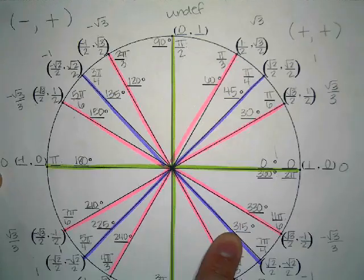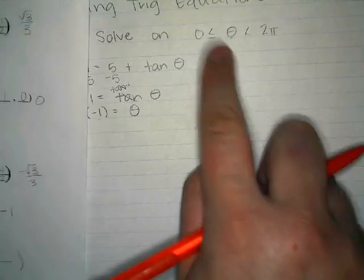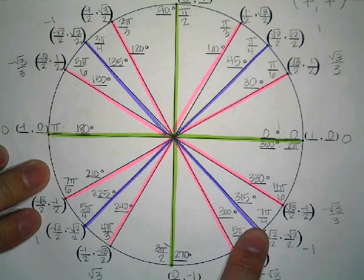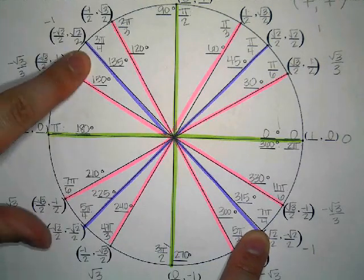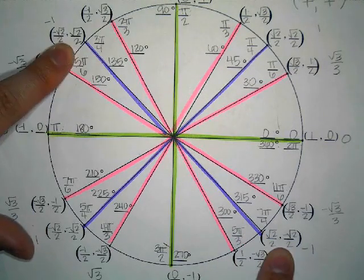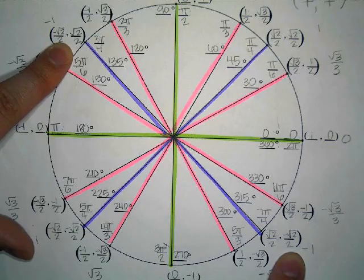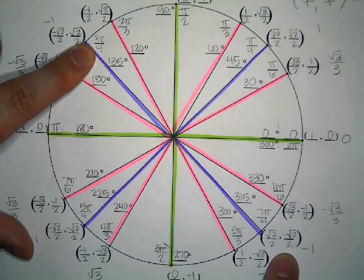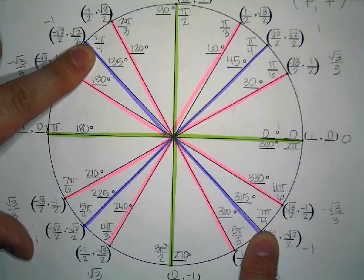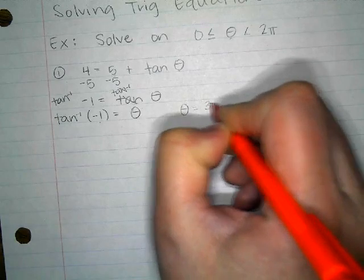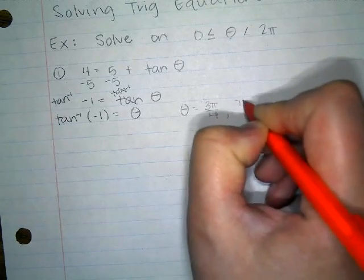They said 315 degrees, but the instructions say between 0 and 2π, so I'm not going to use 315 — I'm going to use 7π/4. And then where else? 3π/4. Those are the two places where the radian measurement corresponds to x and y coordinates where y divided by x would simplify to negative 1. So theta equals 3π/4 and 7π/4.